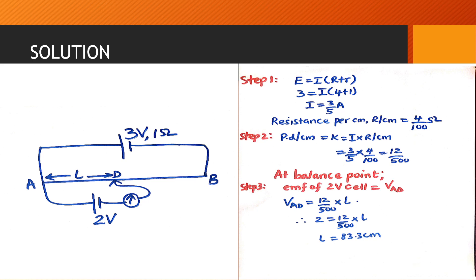To calculate the PD per centimeter, we multiply the current by the resistance per centimeter — using the formula V = IR, where R is the resistance for 1 centimeter. At the balance point, the PD from point A to D is equal to the EMF of the 2V cell. The PD from A to D equals the PD per centimeter times the balance length L. So we get 12 divided by 500 times L equals 2, and from there we calculate the balance length L as 83.3 centimeters.